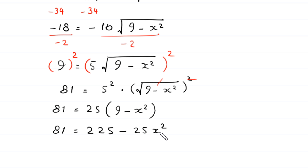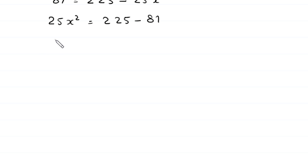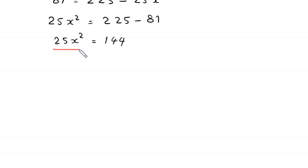Expanding the right side: 81 equals 25 times 9 which is 225, minus 25x squared. Moving negative 25x squared to the left and 81 to the right gives positive 25x squared equals 225 minus 81, which equals 144. We then divide both sides by 25.